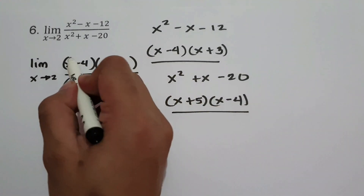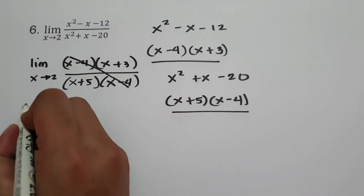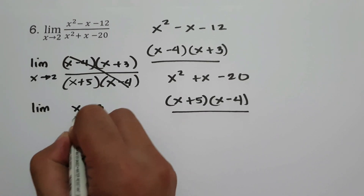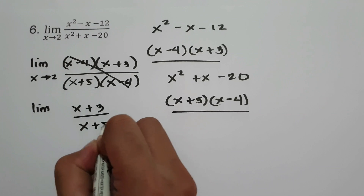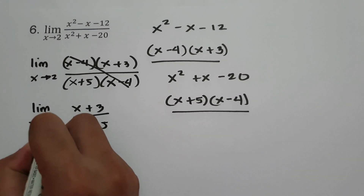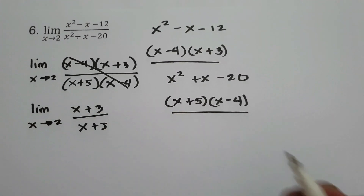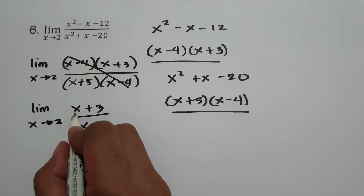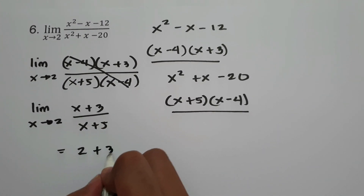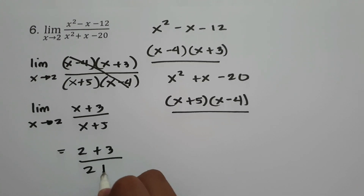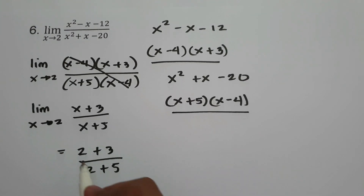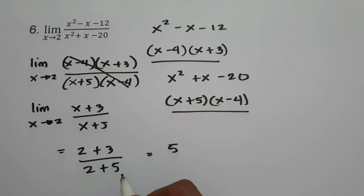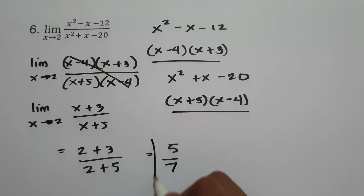So we have the limit of x minus 4 times x plus 3 over x plus 5 times x minus 4 as x approaches 2. We cancel x minus 4, leaving the limit of x plus 3 over x plus 5 as x approaches 2. Substituting x equals 2: 2 plus 3 is 5, and 2 plus 5 is 7. So our answer is 5 over 7.